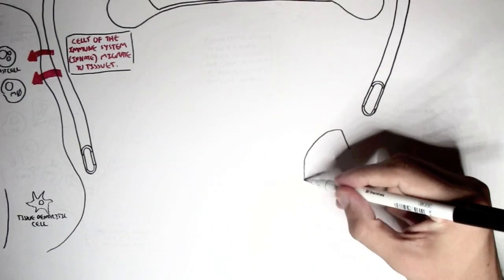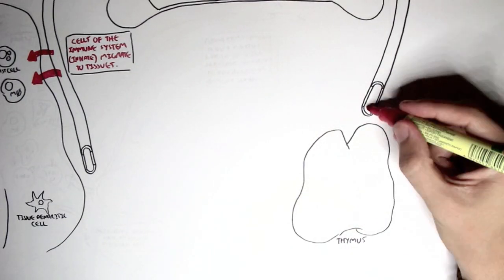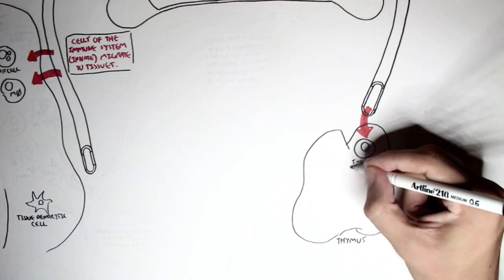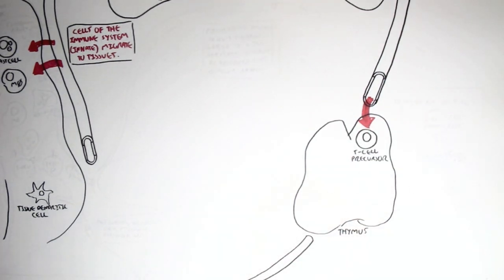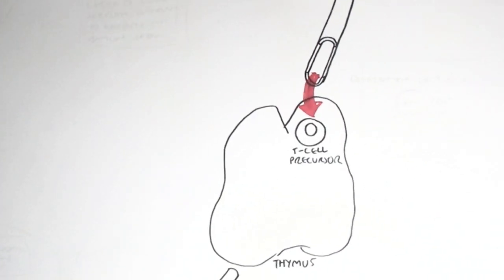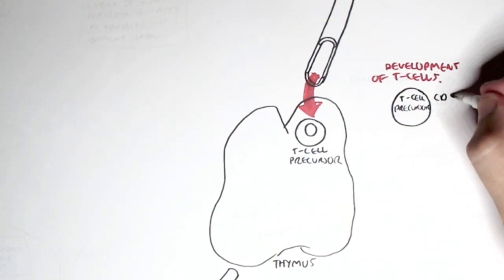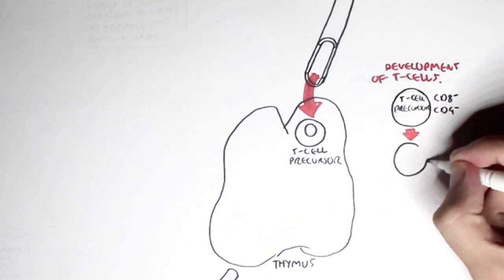Now in the last video, we learned how the lymphoid precursor cell, which would become a T cell, so we just call it a T cell precursor, enters the thymus, and this T cell precursor expresses no CD8 or CD4 coreceptor.